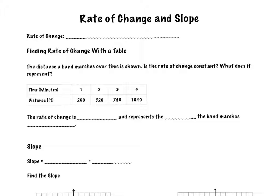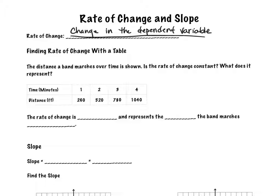Today we're going to talk about rate of change and slope, starting the next unit looking at linear equations and their properties. To understand linear equations we need to start with understanding rate of change. Rate of change is the change in the dependent variable divided by the change in the independent variable.